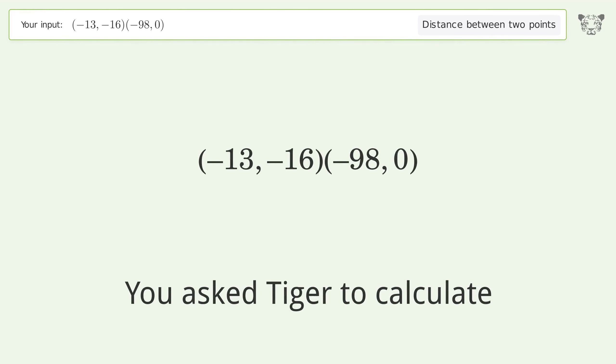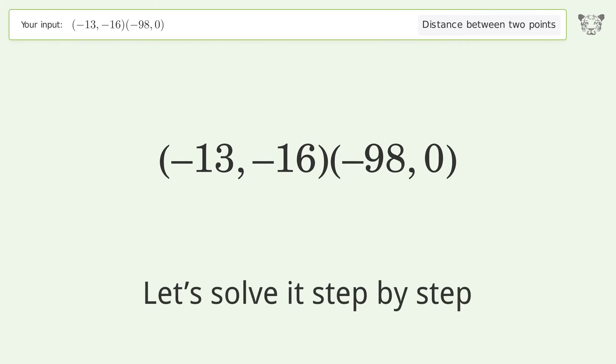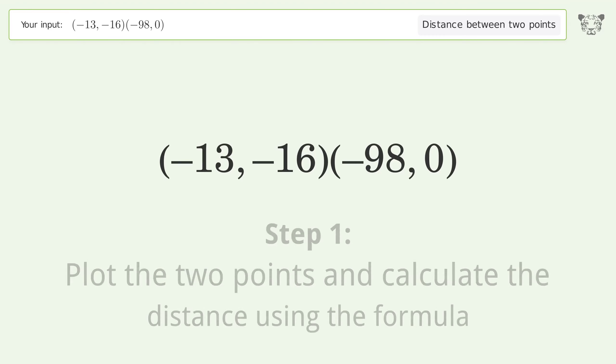You asked Tiger to calculate this. This deals with the distance between two points. The distance between the two points is the square root of 7481, or 86.493. Let's solve it step by step. Plot the two points and calculate the distance using the formula.